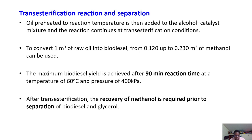After transesterification, separation is required. In the reaction, oil preheated to reaction temperature is added to the alcohol-catalyst mixture. To convert one cubic meter of raw oil into biodiesel, approximately 0.12 to 0.23 cubic meters of biomethanol is used. Maximum diesel yield is achieved after about 90 minutes at 60°C and a pressure of approximately 400 kiloPascals.